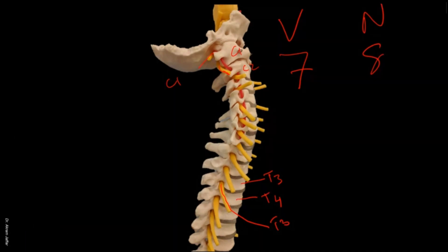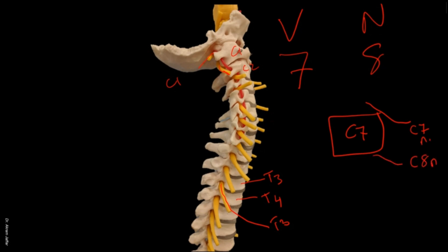So if this is C7 vertebra, then above it is C7 nerve, and below it is C8 nerve, and then comes T1 vertebra, below which is T1 nerve, and so on.